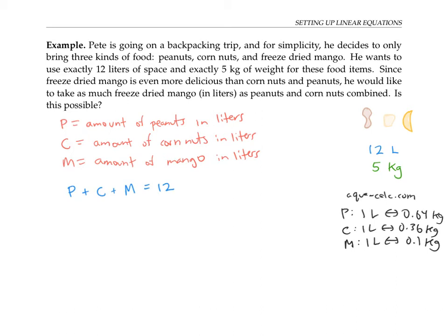So therefore, the P liters of peanuts will weigh 0.64 times P kilograms. The C corn nuts will weigh 0.36 times C kilograms. And the M liters of mango will weigh 0.1 times M kilograms. So that has to add up to five kilograms.